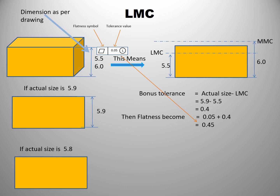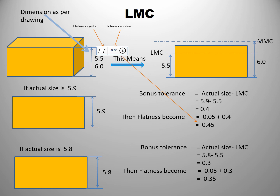Consider another example where the produced component measures 5.8. The bonus tolerance is actual size minus LMC: 5.8 minus 5.5 equals 0.3. Adding this bonus tolerance to the given geometrical tolerance of 0.05 gives a modified geometrical tolerance of 0.35.